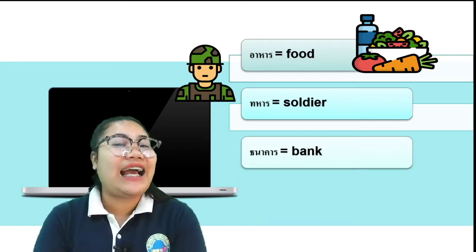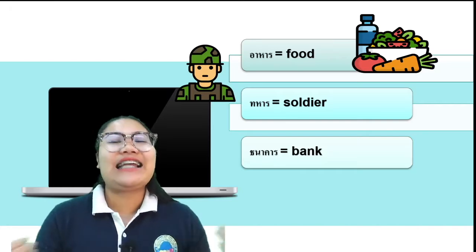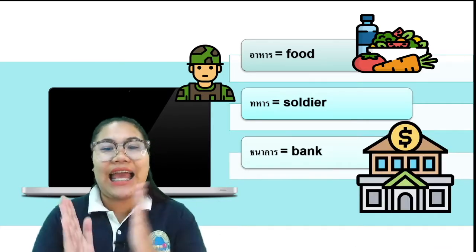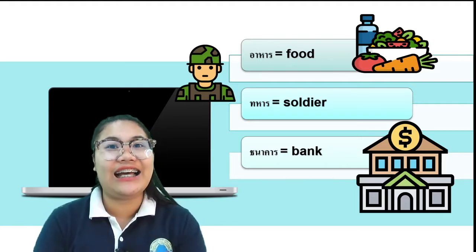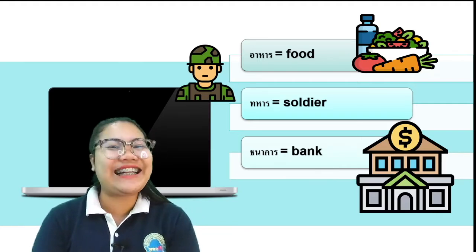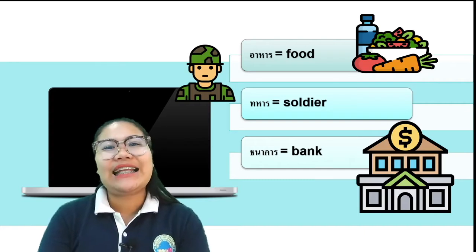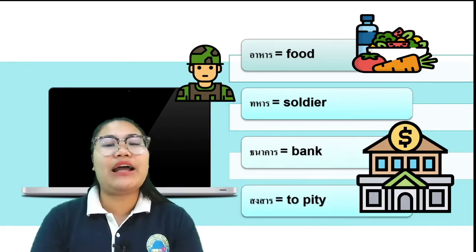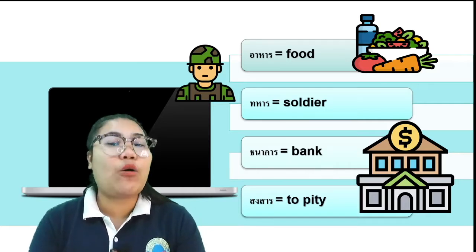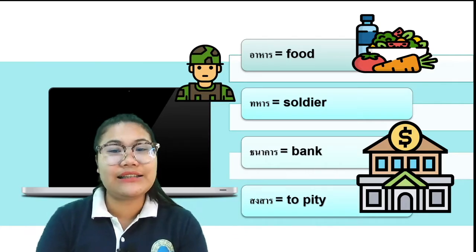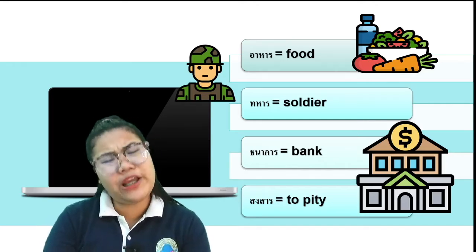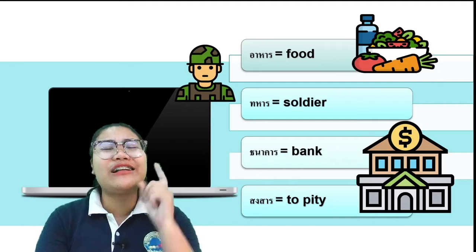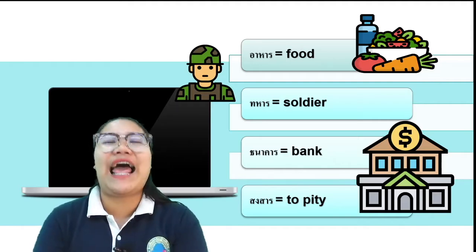Here is the word ธนาคาร — ธนาคาร — which means 'bank'. You will see รอเรือร์ giving the sound น at the end. And the last example for this rule: the word สงสาร — สงสาร — which means 'to pity.' รอเรือร์ is pronounced as น.